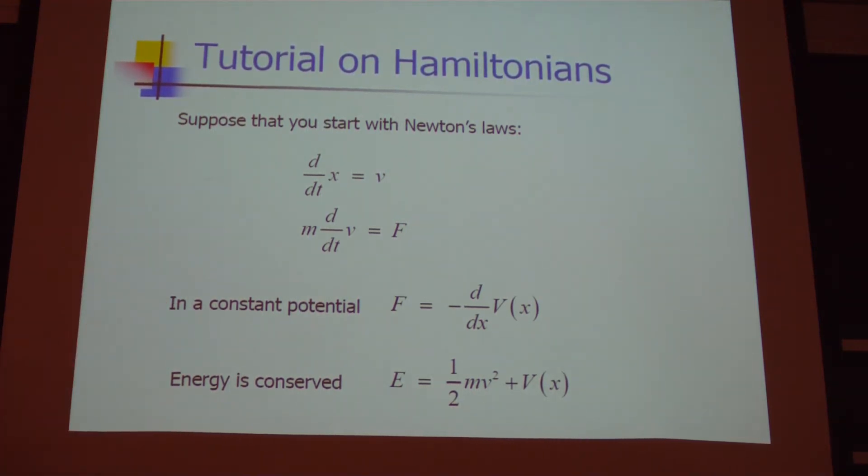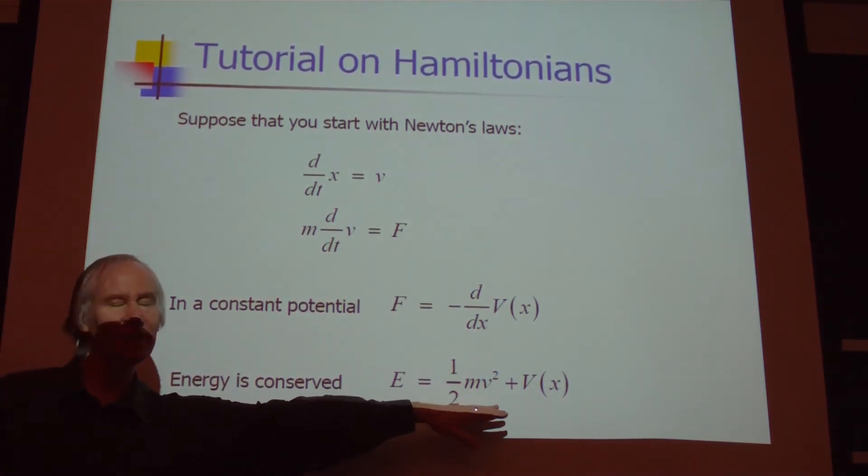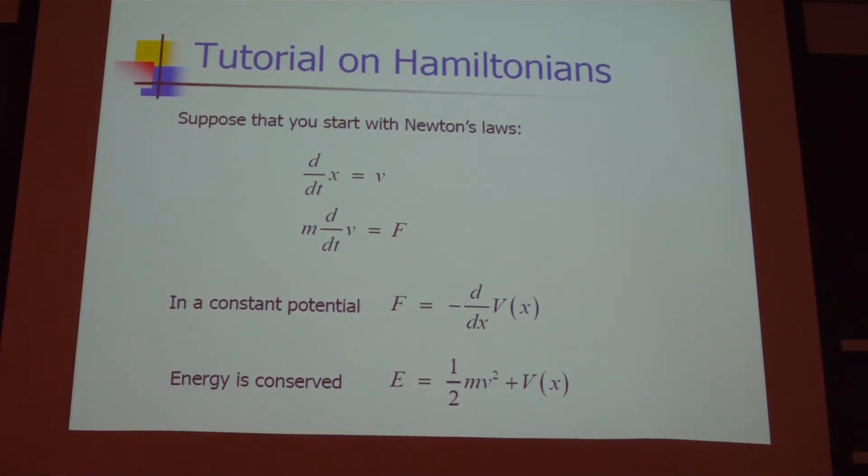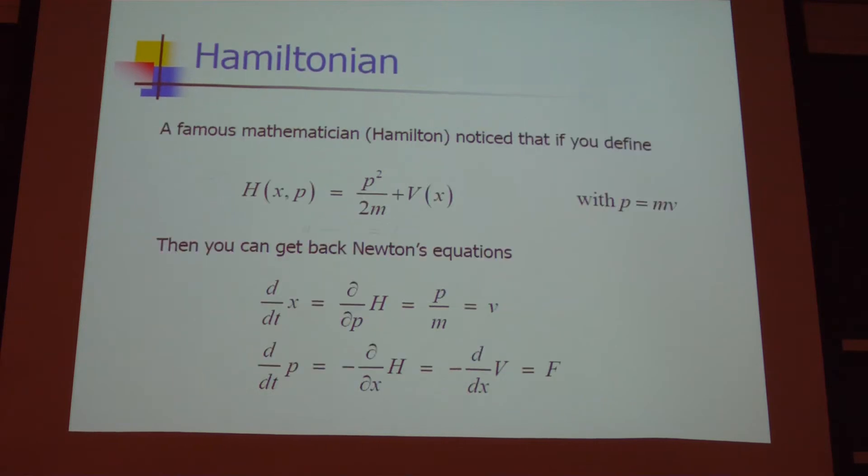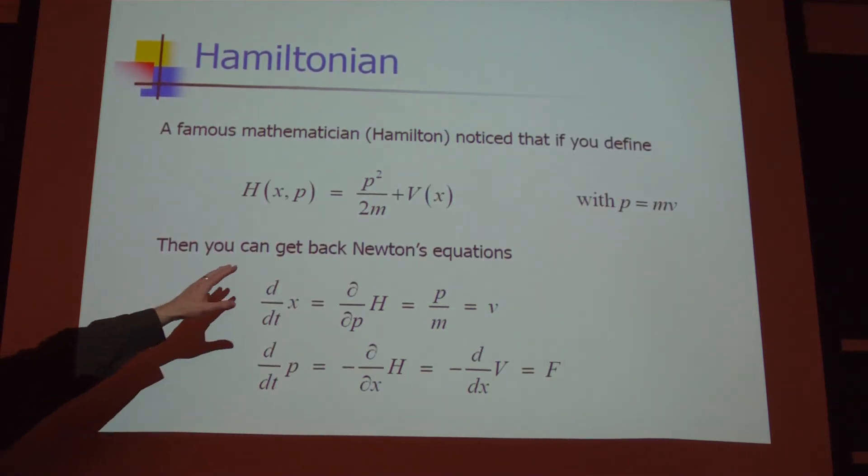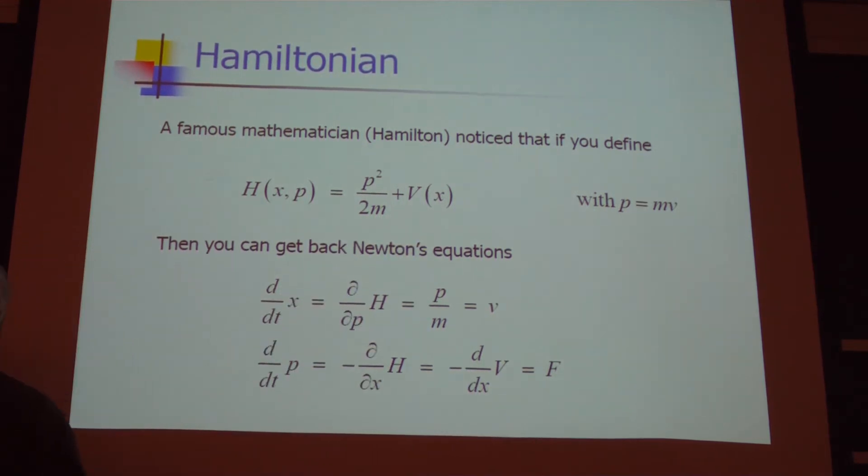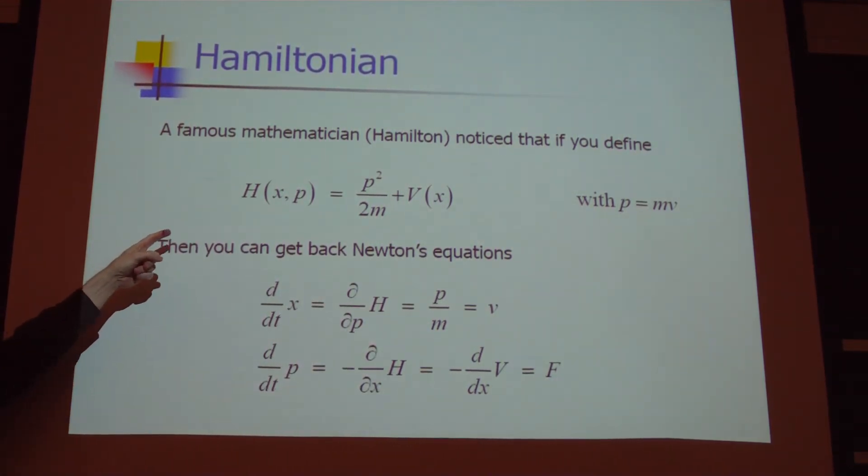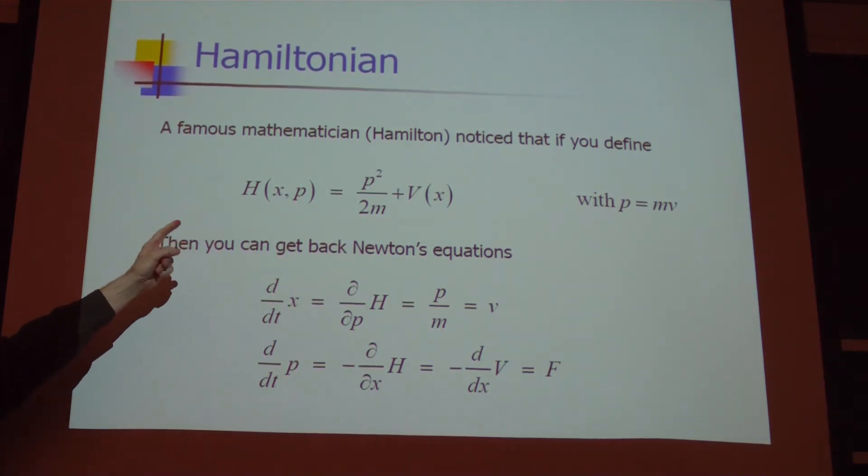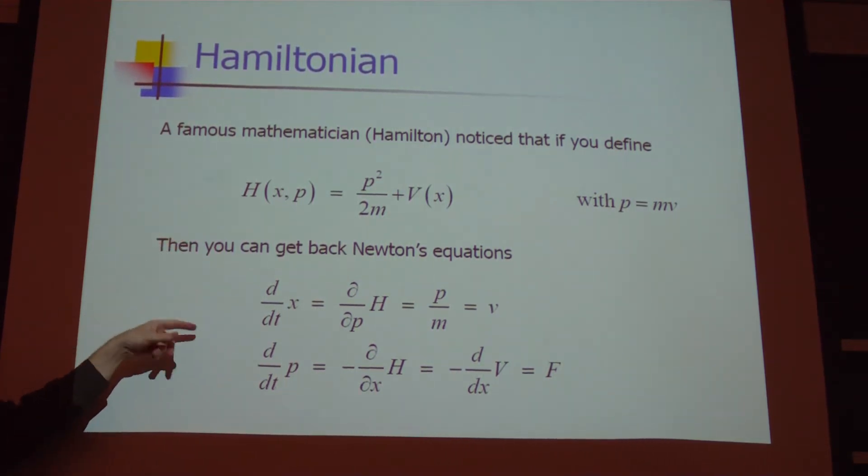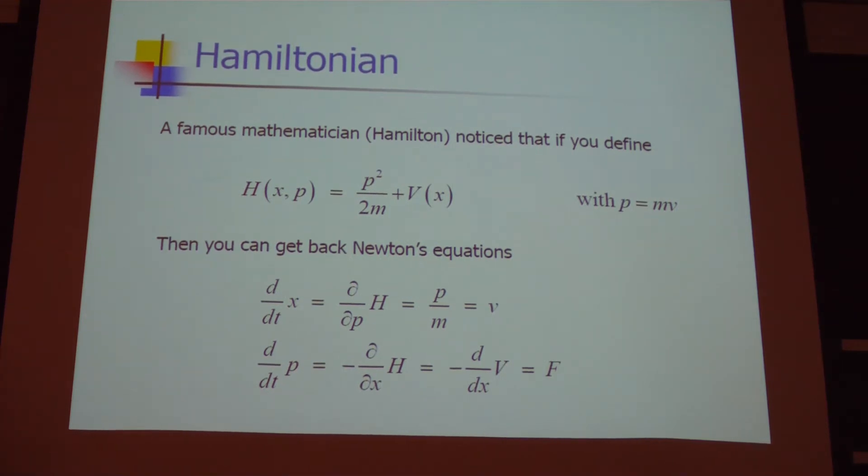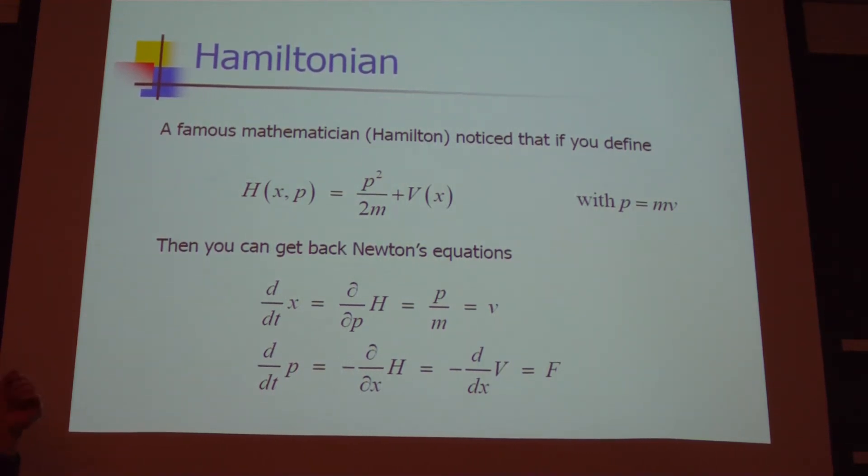Not everybody knows what a Hamiltonian is. So the place to start is if we have Newton's laws. If a position advances according to velocity and a change in momentum is related to the force, then with constant potential you get energy. So energy is kinetic energy plus potential energy. And what Hamilton did is he said that if you construct this object which has kinetic energy and potential energy in it, then once you have that, you can actually recover your dynamical equations from that. So this is all that you need.